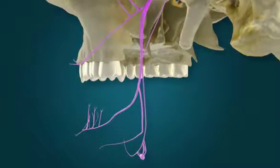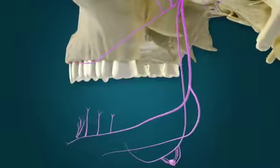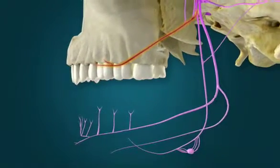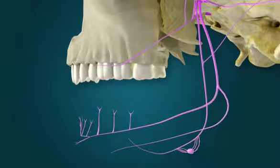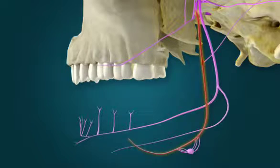Sensory fibers from the cheek form the buccal nerve, and sensory fibers from the anterior two-thirds of the tongue and the floor of the oral cavity form the lingual nerve.